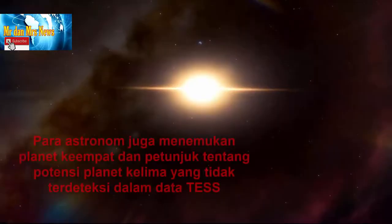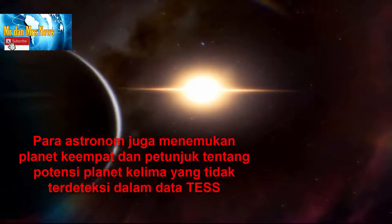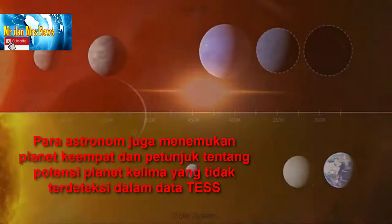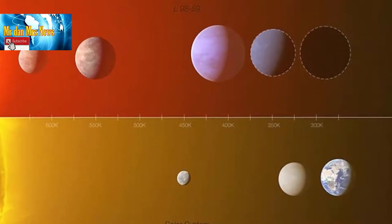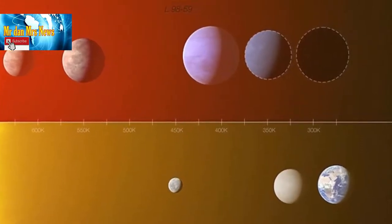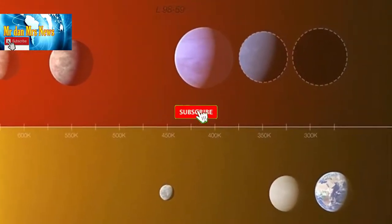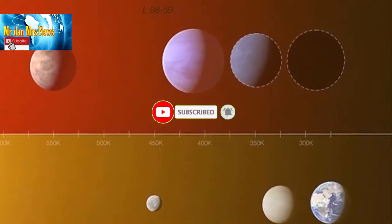Para astronom juga menemukan planet keempat dan peduli tentang potensi planet kelima yang tidak terdeteksi dalam data TESS. Planet kelima itu mungkin berada pada jarak yang memungkinkan air cair terbentuk di permukaan. Ini dikenal sebagai zona layak huni bintang.